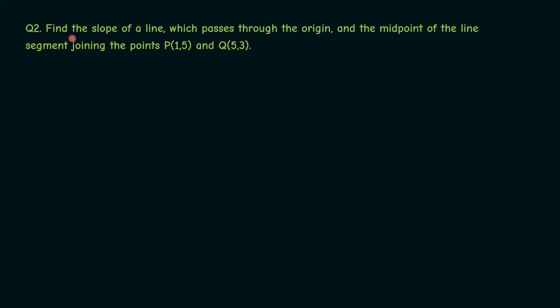Second question: Find the slope of a line which passes through the origin and the midpoint of the line segment joining the points P(1, 5) and Q(5, 3). Pause the video if you'd like to try it yourself, and when you are ready keep watching for the solution.